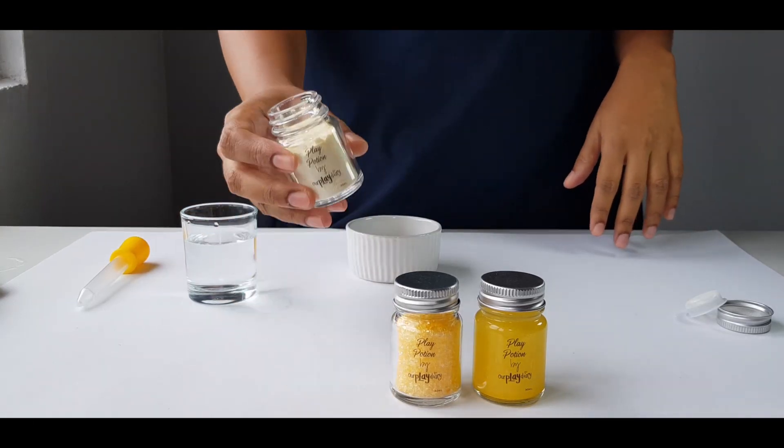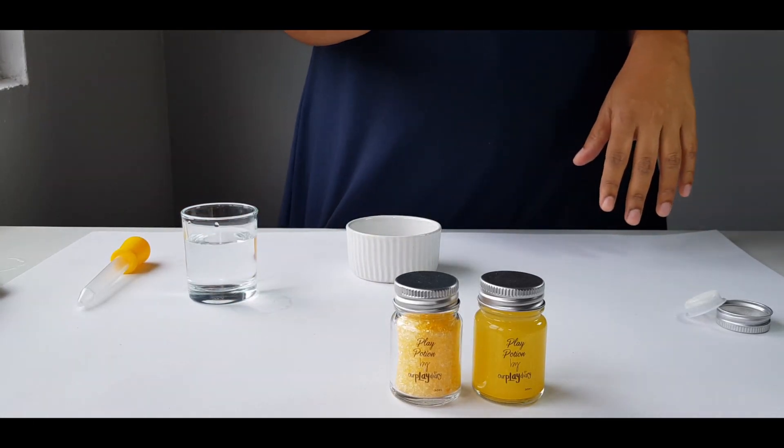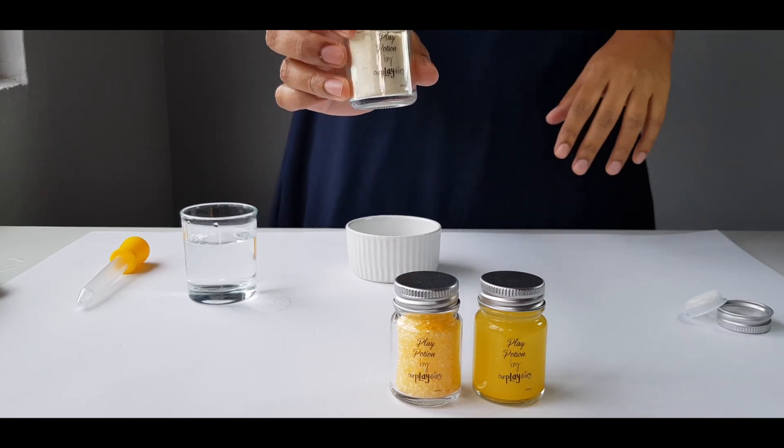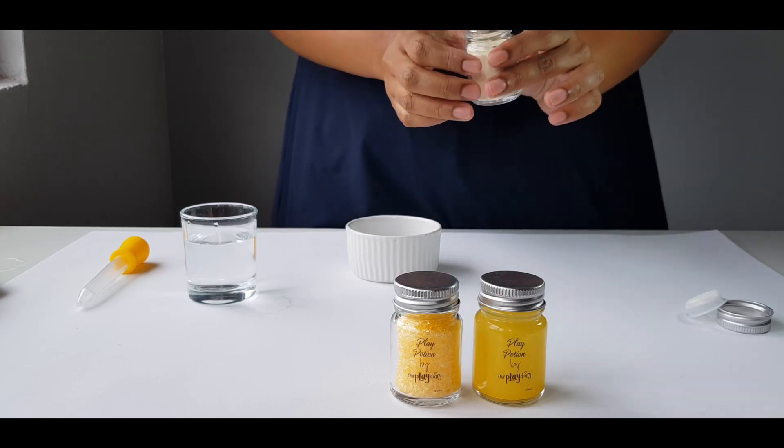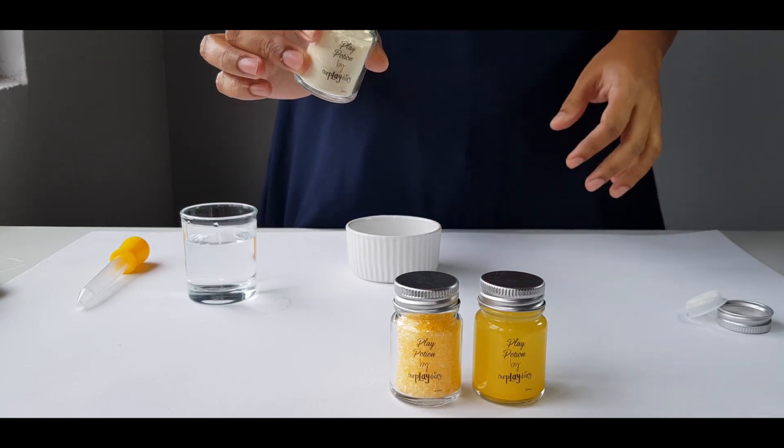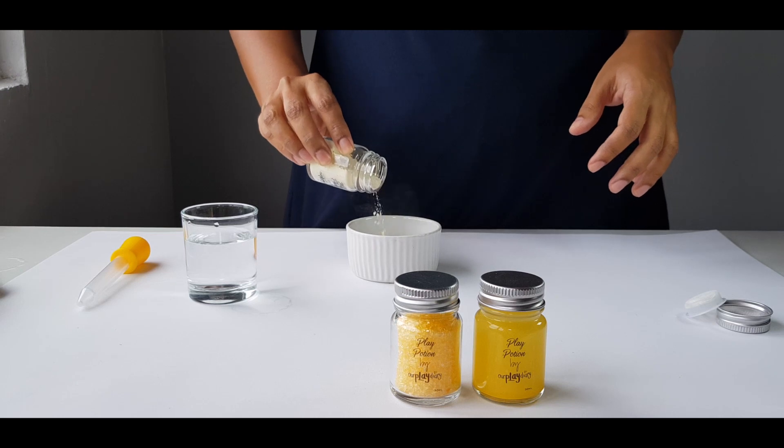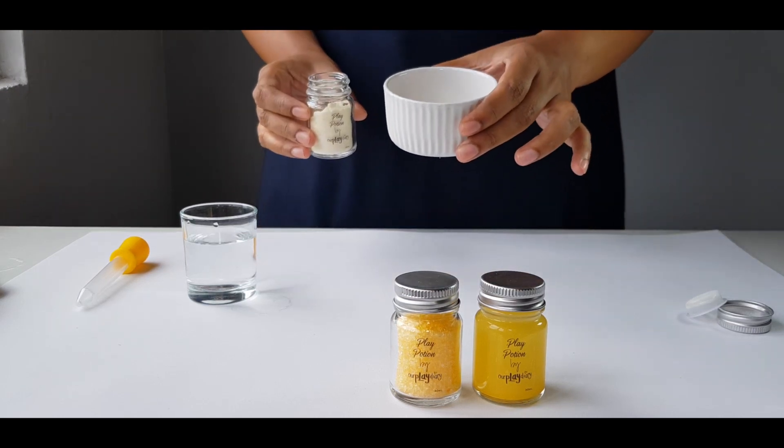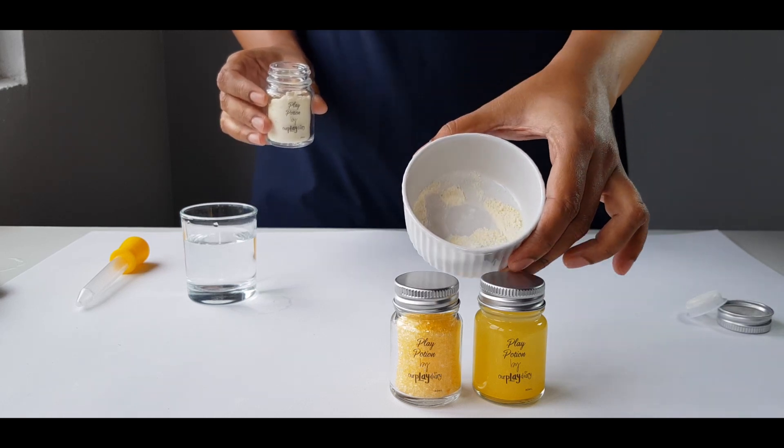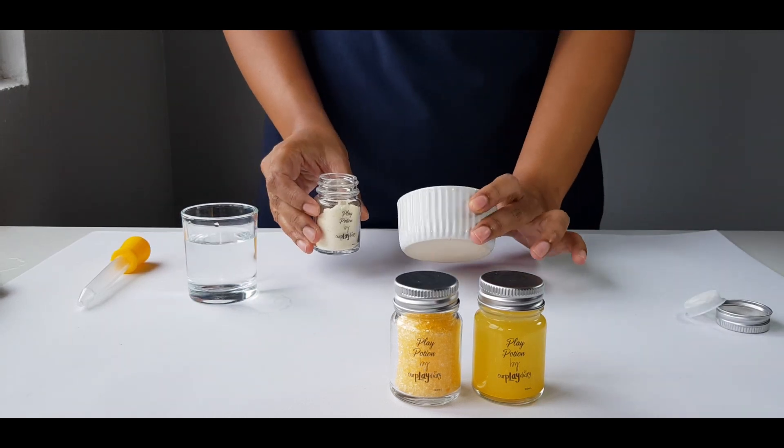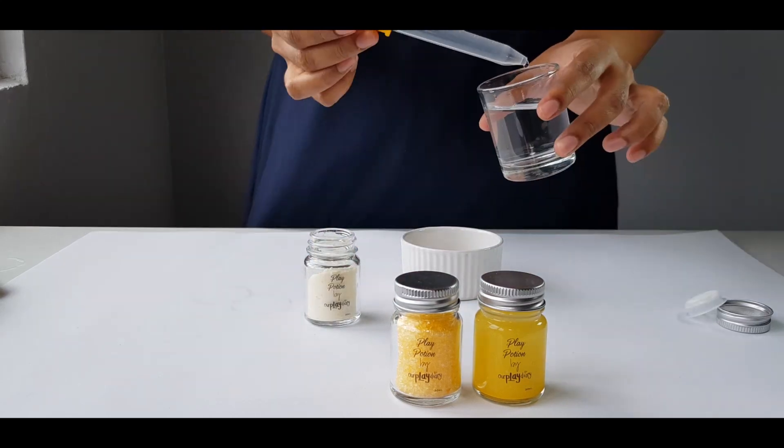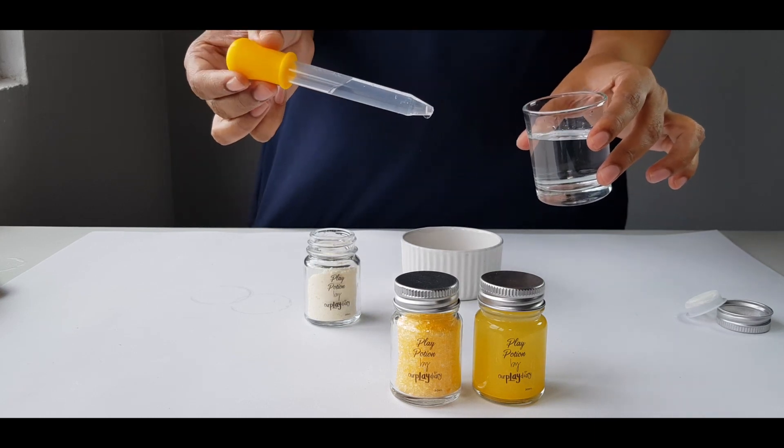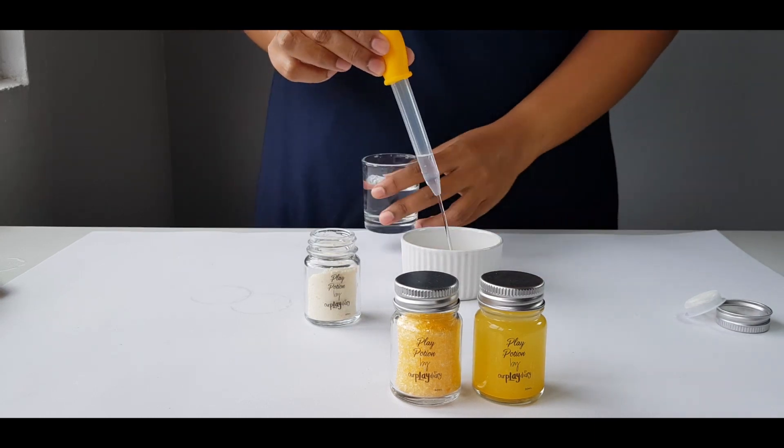So today I'm going to show you how to use the magic dust. The color yellow and it looks kind of white. I'll show you how to do a color reveal. So all you need to do is sprinkle some of the magic dust into a bowl and then you take a squirt dropper and then you get some clean water and you just squirt it in.